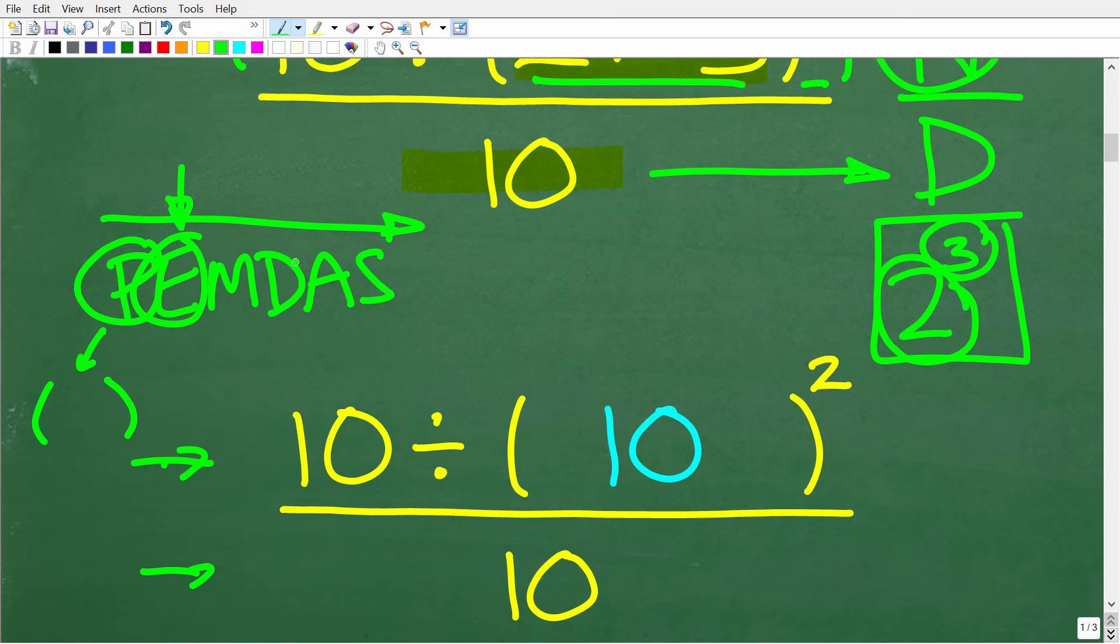All right, so the next step here in PEMDAS is going to be M and D. This stands for multiplication and division. Now, you've got to be really careful with these steps right here or these steps that involve multiplication and division. So the way this works is we're going to handle any multiplication or division, whatever we see first from left to right. Okay, so once we finish with all multiplication and division, we'll finish up with any addition and subtraction in the problem. Okay, so hopefully you understand the order of operations. And then, of course, I gave you a real big clue on what we're going to do next.